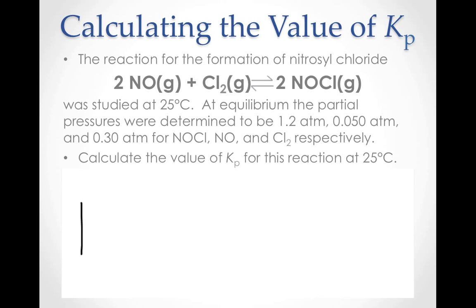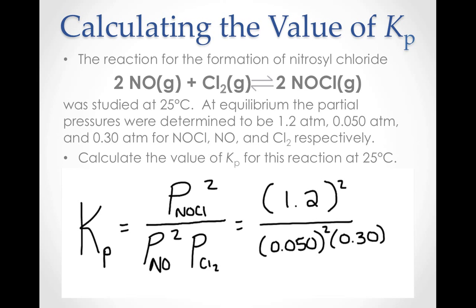The value of the equilibrium constant Kp can simply be calculated by substituting the partial pressures and the coefficients into the law of mass action. This calculation yields a Kp value of 1.9 times 10 to the third power.